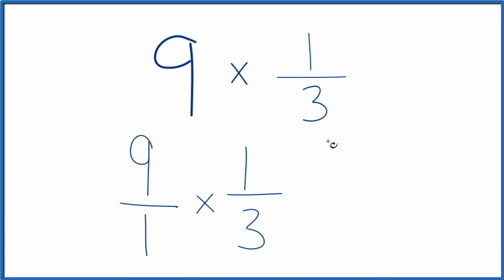1 3rd. When we multiply fractions, we're going to multiply the numerators, then the denominators. 9 times 1 is 9. 1 times 3, that's 3. So we end up with 9 times 1 3rd, that equals 9 over 3.